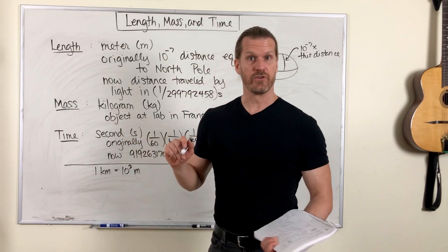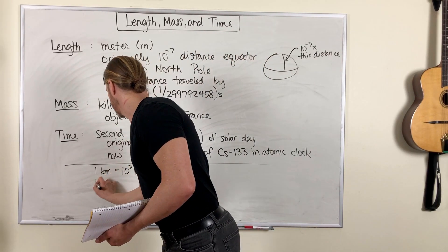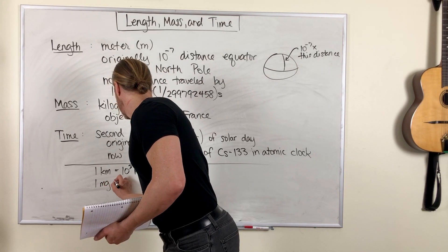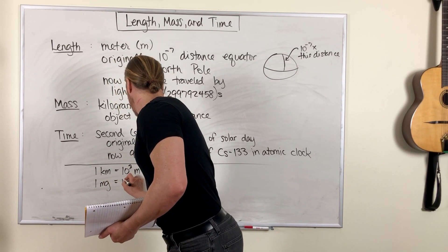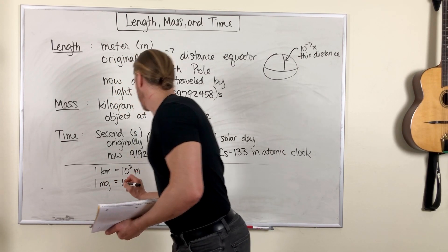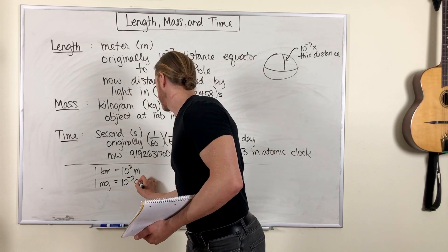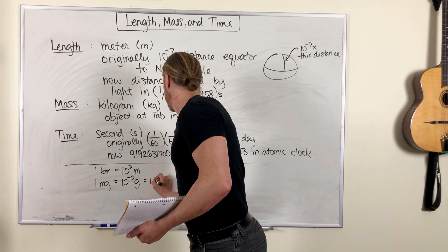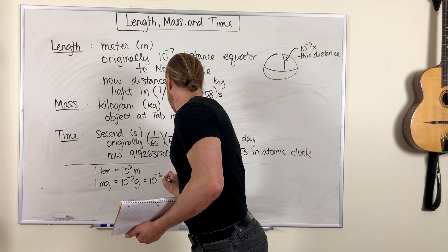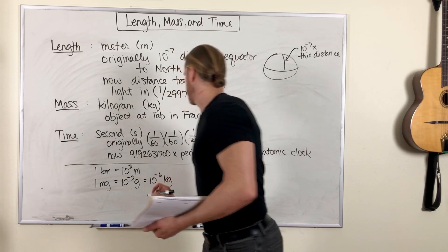One milligram is one-thousandth of a gram, or one-millionth of a kilogram.